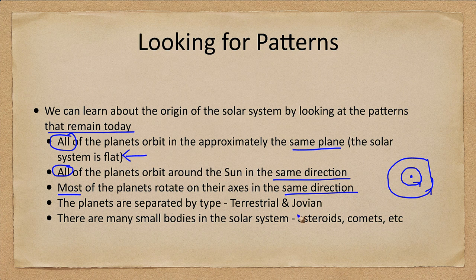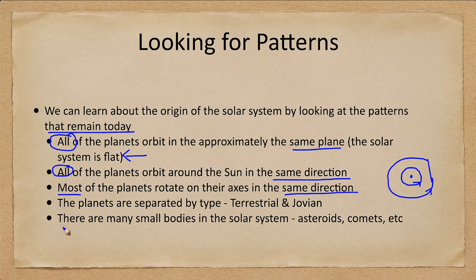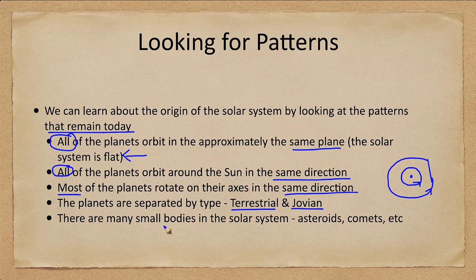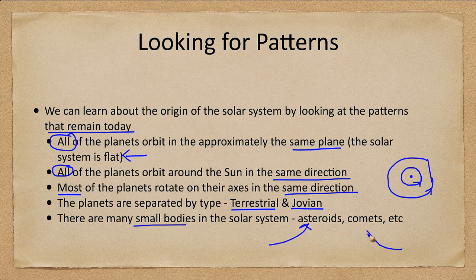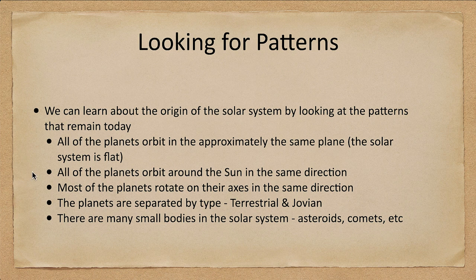If you look down from the north pole of any planet with a couple of exceptions, you will see that they are rotating in the same direction, and those two may be unusual things that we can try to explain. We also note that the planets are separated into terrestrial and Jovian type planets as we looked at previously. What about these many small bodies that we see in the solar system, the asteroids and the comets and other types of debris?